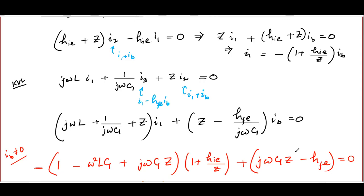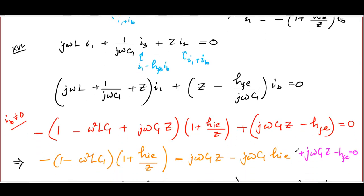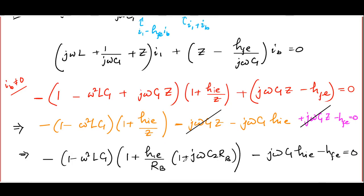The oscillation frequency in hertz is f = (1/2π)·sqrt[(C1+C2)/(L·C1·C2)]. The real part gives the condition for oscillations to occur. Using omega²·L·C1 = 1 + C1/C2, which means 1 − omega²·L·C1 = −C1/C2, the condition becomes: HFE = (C1/C2)·(1 + HIE/RB). For oscillations to start and grow, HFE must exceed (C1/C2)·(1 + HIE/RB).